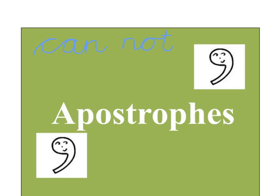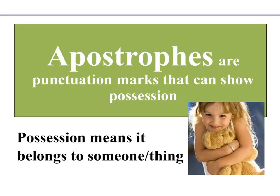Today we're going to be learning about apostrophes. We've already learned that apostrophes can be used in contractions when you put two words together — for example, 'cannot' becomes 'can't,' and we put the apostrophe where the 'o' should go. Today we're going to learn that we can also use apostrophes to show possession. Possession means it belongs to someone or something.